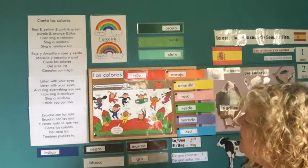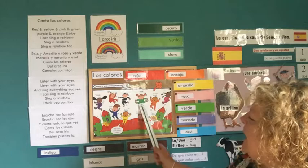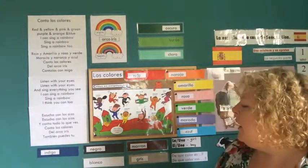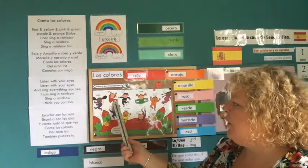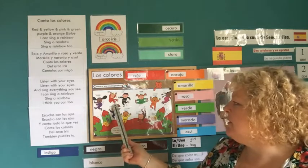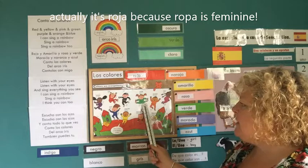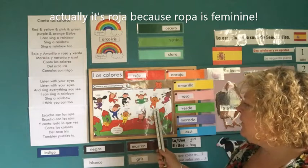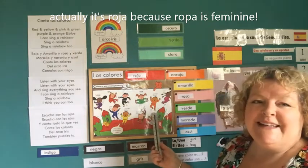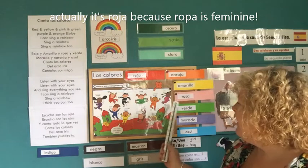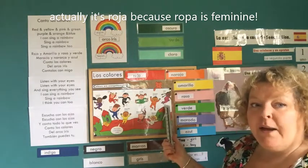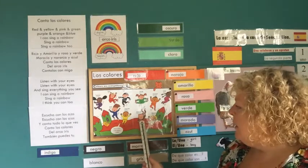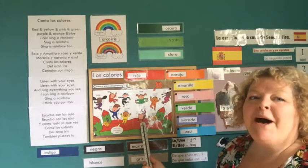Vale. Vamos a ver los niños en el ropa de color. ¿Qué color es eso? Sí, es rojo. ¿Qué color es eso? Sí, es verde. ¡Qué bien! ¿Qué color es eso? Sí, es naranja. Y eso - rosa, pink. Y eso - blanco. ¿Qué color? Marrón. ¡Qué bien!